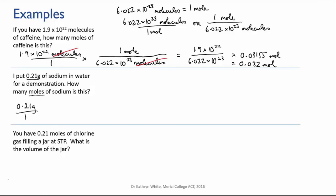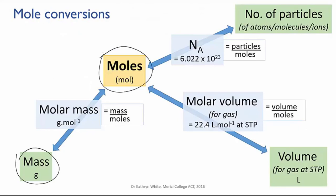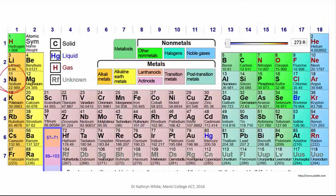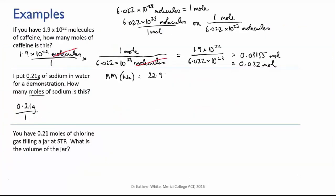Now, I want to convert from mass to moles. So the conversion factor that I'm going to need is the molar mass. So I need to go to the periodic table, and I need to find sodium, and find the molar mass of sodium, which is 22.989 grams per mole.